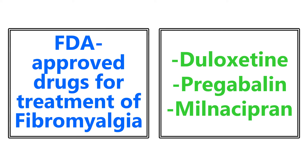FDA approved drugs for treatment of fibromyalgia — there are three of them: duloxetine, pregabalin, and milnacipran. Those are important to know for treatment of fibromyalgia.